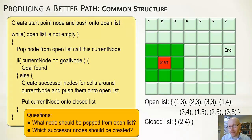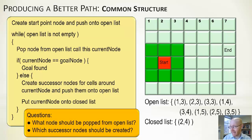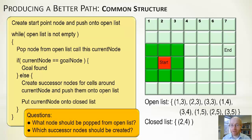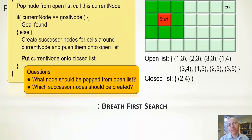Key questions for all these algorithms: which node should you take from the open list — one at random, or selected by some criteria? And when creating new successor nodes, which ones do you create? Generally, nodes not currently on the open list that you could potentially visit from your current location.